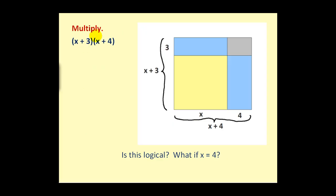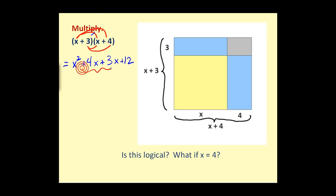Now let's look at a binomial times a binomial. The rule states we multiply each term in the first by each term in the second. Think of distributing x into the second binomial, and then distributing 3 into the second binomial. So: x times x equals x², x times 4 equals 4x, 3 times x equals 3x, and 3 times 4 equals 12. We have two like terms in the middle, so the final simplified product is x² + 7x + 12.